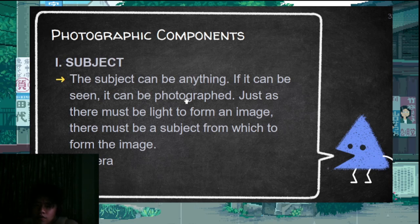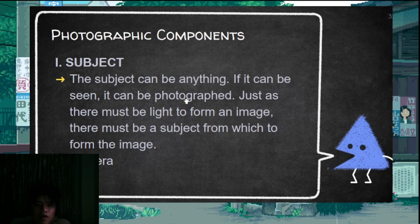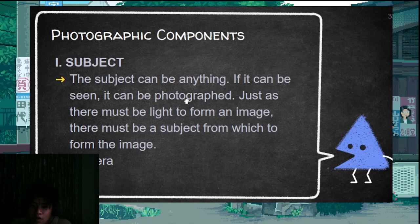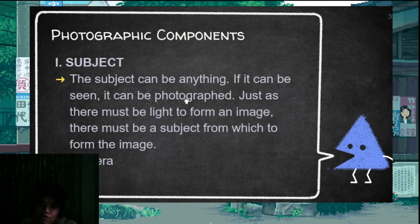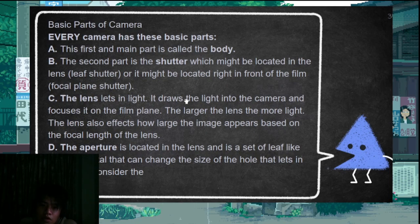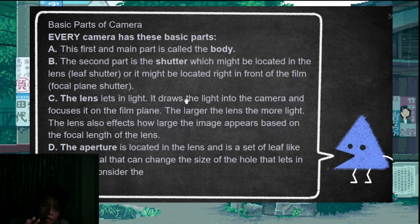Now let's move to the photographic components. One of the components of photography is the subject — it is your main focus when using a camera. It can be anything that can be seen and photographed. Just as there must be light to form an image, there must also be a subject. And the camera itself is one of the photographic components. One of the basic parts of the camera is, number one, the body — where all the parts of the camera are housed.